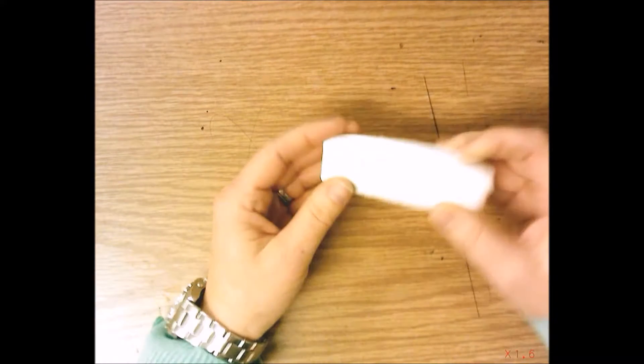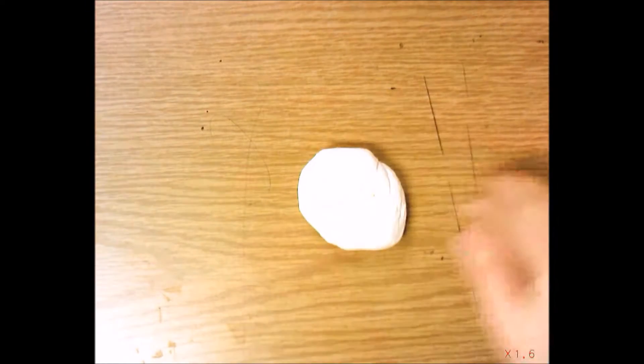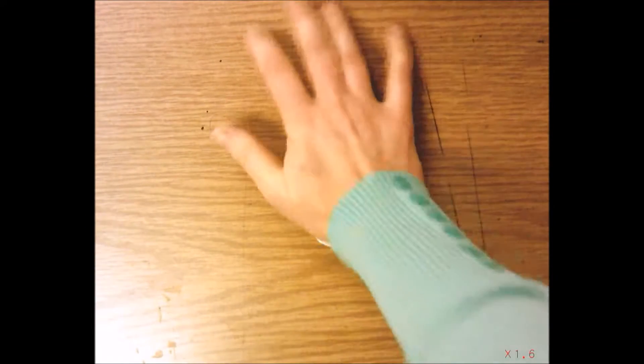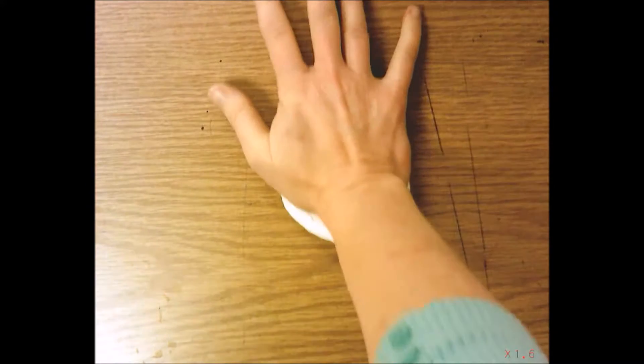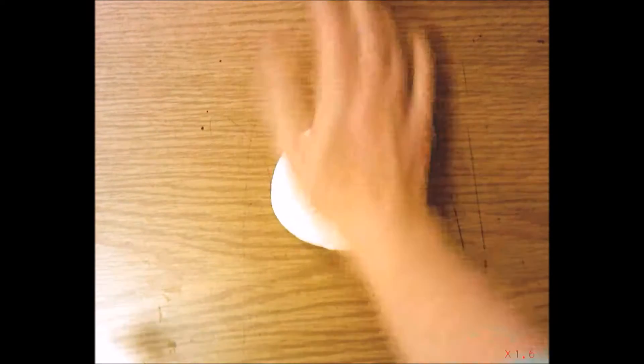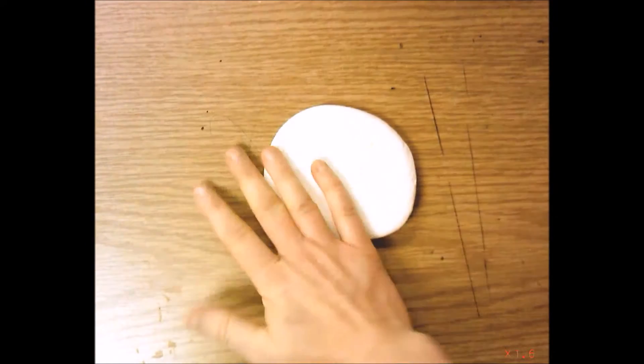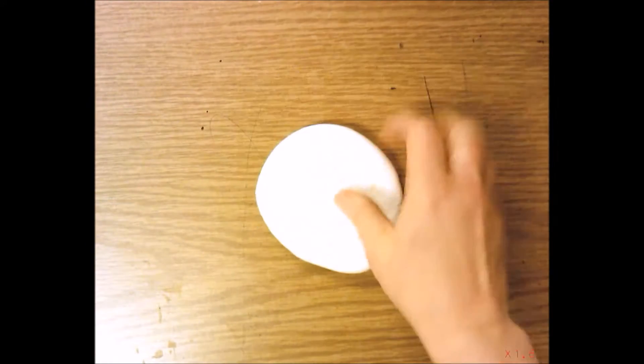You're going to start with a piece of model magic. Ball it up a little bit and then press this down onto the table. You might want to stand up and use the palm of your hand, not your fist. You're going to press this down and you've got to keep pressing. It feels like nothing's happening but it is getting thinner.